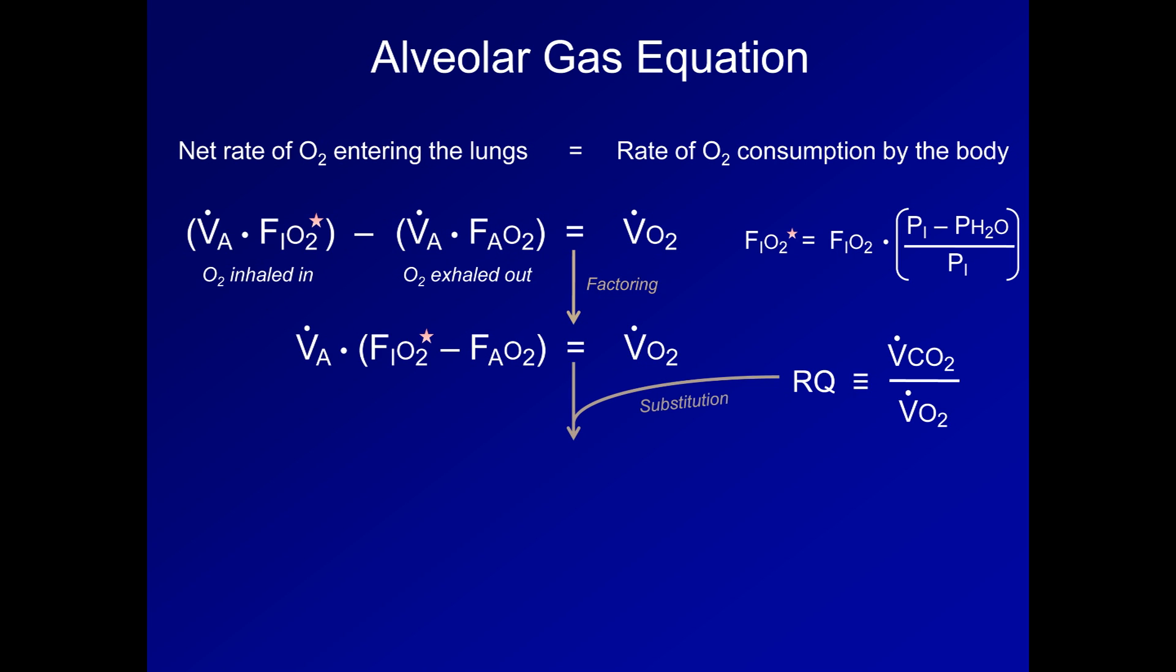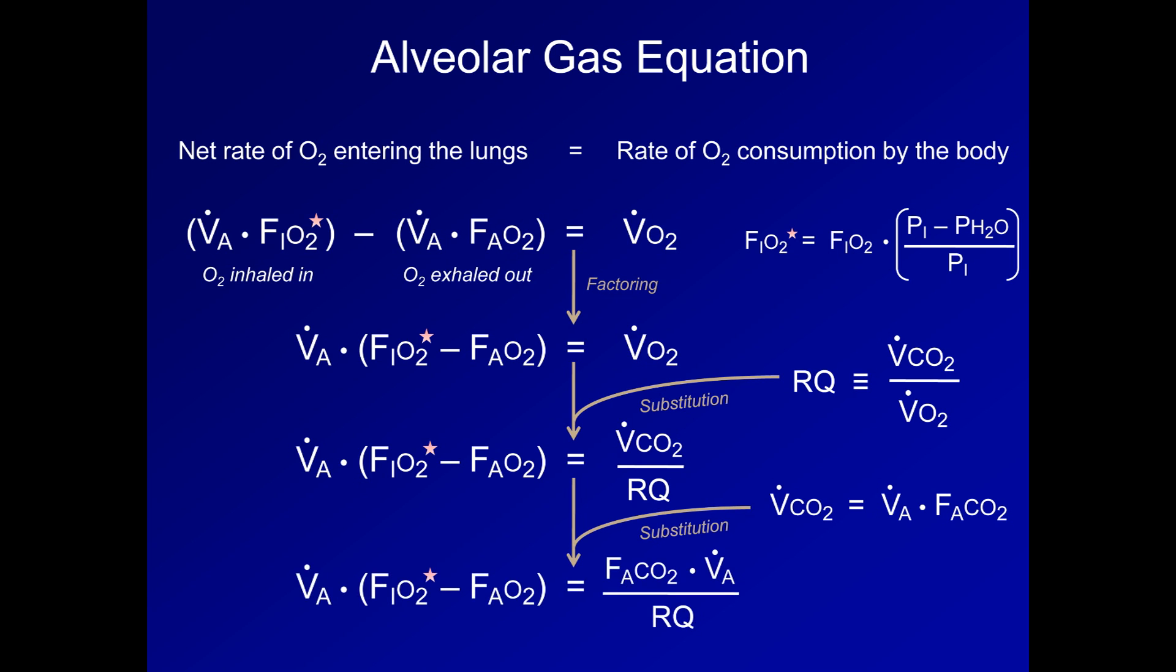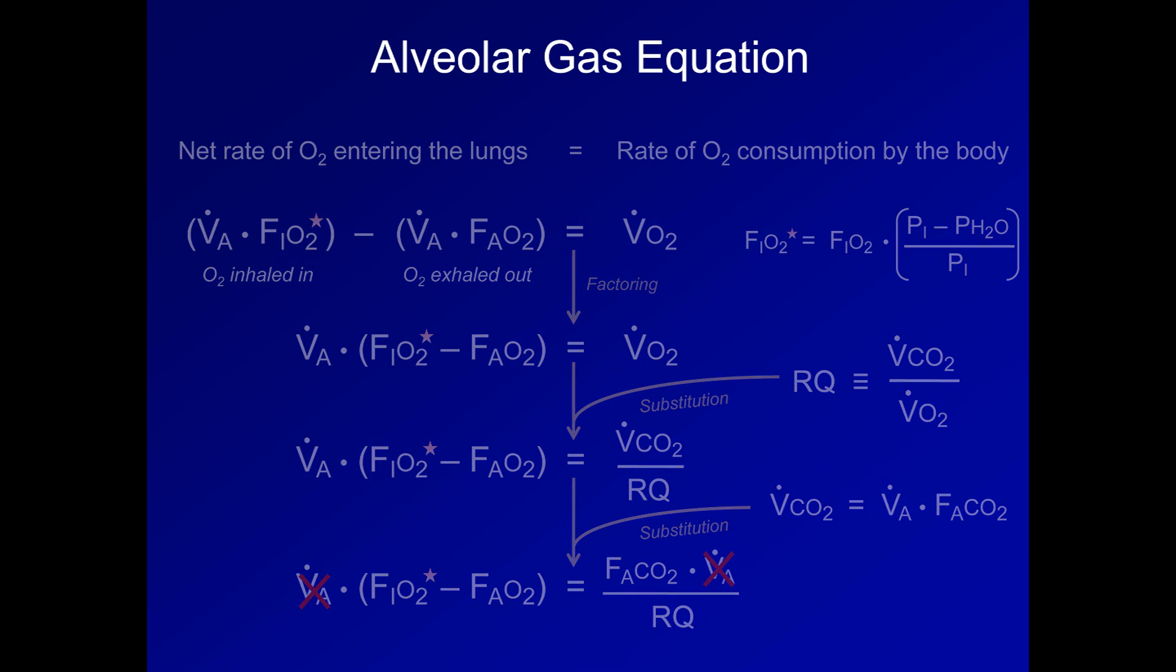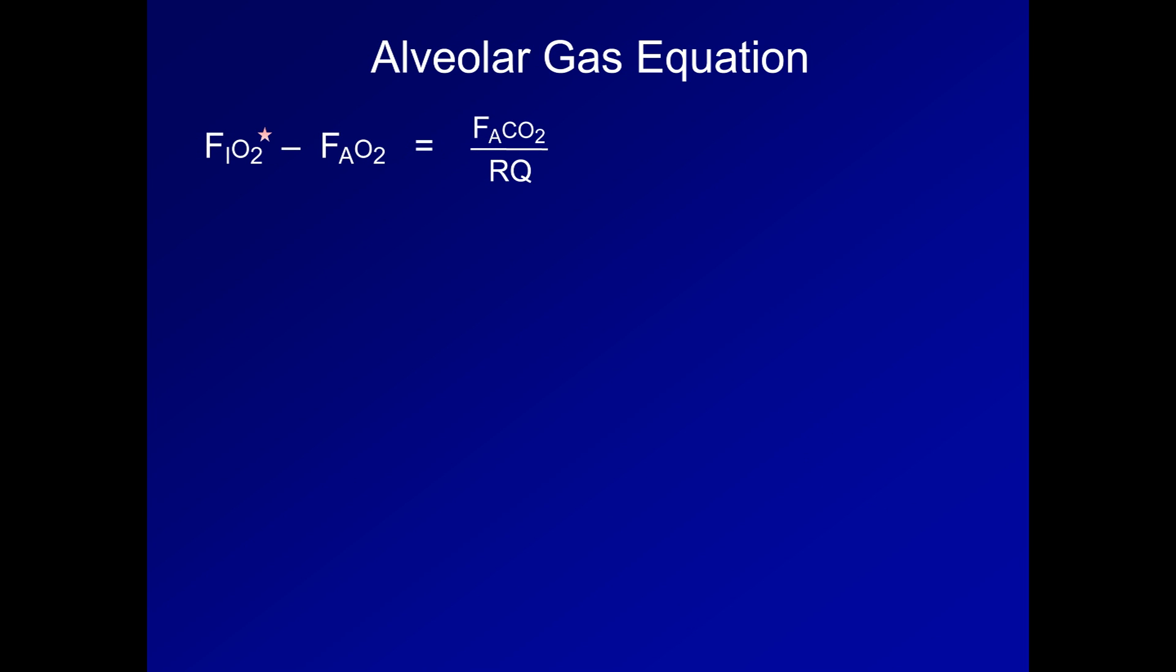With some substitution, we'll replace V.O2 with V.CO2 divided by the respiratory quotient. Remembering from our derivation of the alveolar ventilation equation, V.CO2 equals alveolar ventilation times the fraction of CO2 in alveolar gas. So we'll substitute that in and we get this, and of course the alveolar ventilation of both sides cancels out. We are now left with F.I.O2 star minus F.A.O2 equals F.A.CO2 divided by the respiratory quotient. And after another simple rearrangement, the equation's form is starting to look a little more familiar.